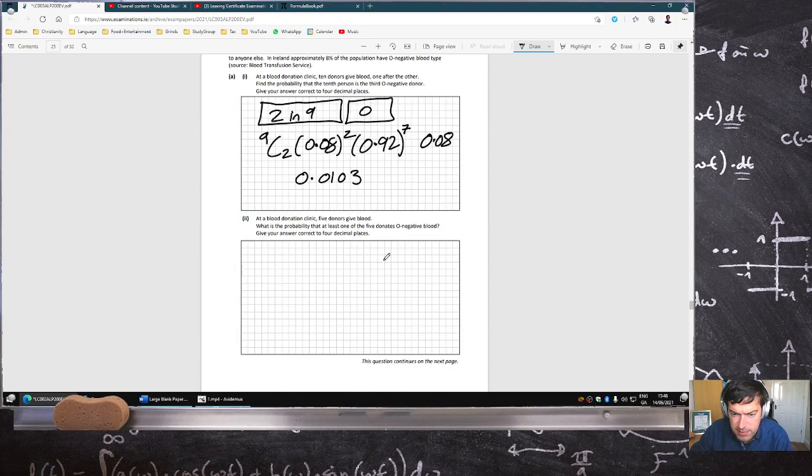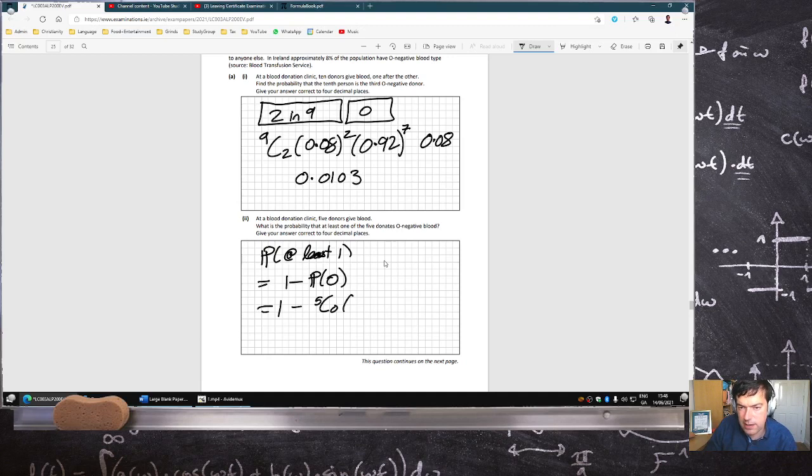Five donors give blood. What's the probability that at least one of the five is O type? That's one minus the probability of none. One minus 5c0, 0.08 power 0, 0.92 power 5. That is 0.34109, four decimal places.